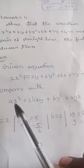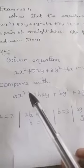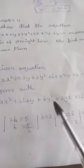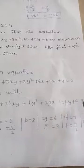The general equation for a pair of straight lines is ax² + 2hxy + by² + 2gx + 2fy + c = 0.